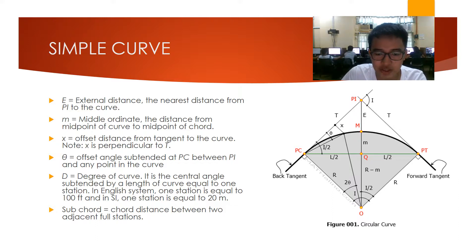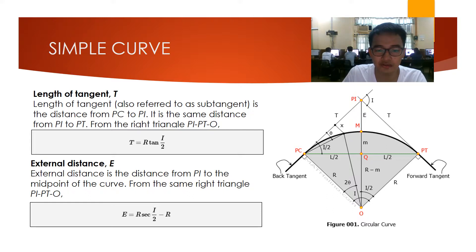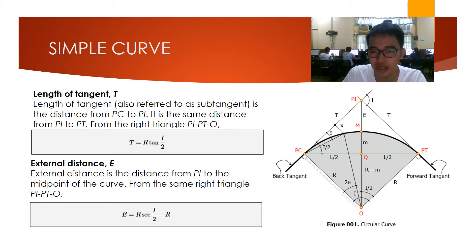For the formulas of circular curves, these formulas need not be memorized. All we need is geometry plus knowledge of the names of all elements in the simple curve. We are only dealing with circular arcs, and it is to our advantage to work at the geometry level rather than memorize formulas. The first formula is the length of the tangent, also referred to as the sub-tangent. It is the distance from PC to PI, which equals the distance from PI to PT. From the right triangle PI-PT-O, we can derive this formula: T is equal to R tangent of I over 2.